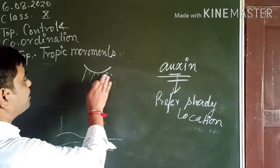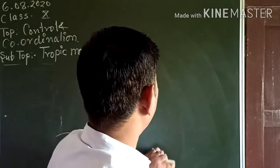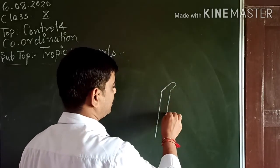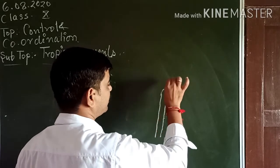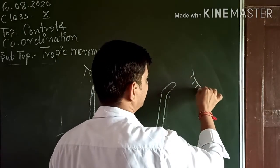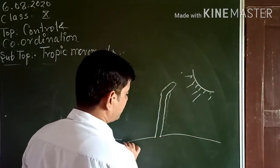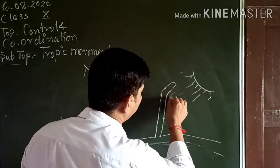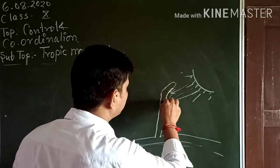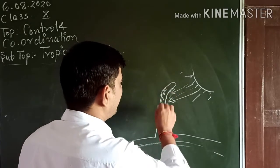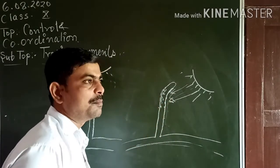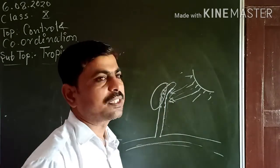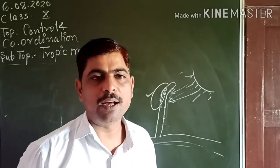If we keep the plant near a window where sunlight comes from one side, the shoot of the plant bends towards the light. What actually happens is that sunlight falls on one region, so auxin from that region starts accumulating in the shady region. That shady region then has more auxin, so growth is more in that area, and as a result, more growth makes the plant bend towards the light. This is the activity of phototropism.